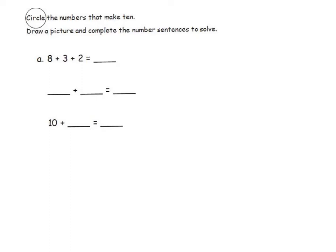To solve this problem, I will start by looking for the two numbers in the equation that make 10. Since 8 and 2 make 10, I will place a circle around these numbers and create a number bond. So 8 and 2 together make 10.